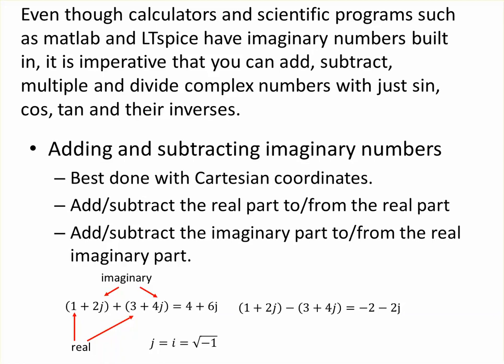The adding and subtracting of imaginary numbers is really best done in Cartesian coordinates because all we have to do is add the real to the real, add the imaginary to the imaginary, or subtract the imaginary from the imaginary and the real from the real.